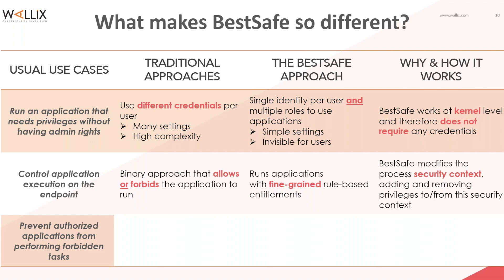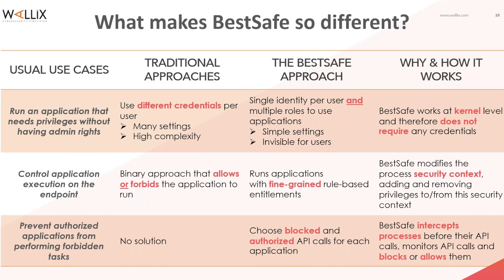This last feature enables organizations to protect endpoints from malware even while allowing admin rights for certain users. This next use case takes granular endpoint protection to new levels. BestSafe enables full control over API calls made by each application and determines whether they are authorized or not. This functionality is particularly useful for protecting web browsers against malware, which can otherwise force the browser to make encryption API calls to encrypt a hard disk, for example.